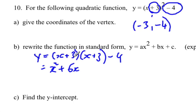And our constant is going to be the last term squared, so that would be plus 9 minus 4. So this is y equals x squared plus 6x plus 5.